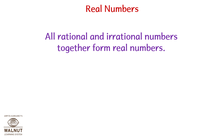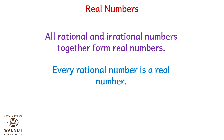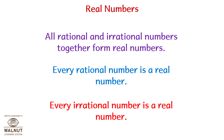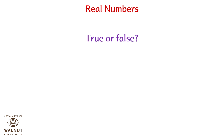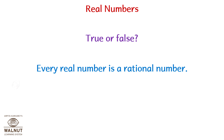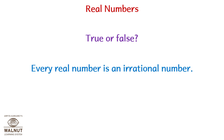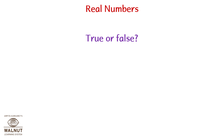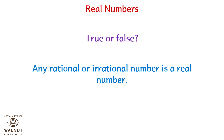Real Numbers: all rational and irrational numbers together form real numbers. Every rational number is a real number. Every irrational number is a real number too. True or false: every real number is a rational number — False. Every real number is an irrational number — False. Any rational or irrational number is a real number — True.